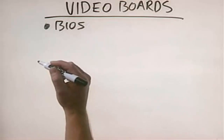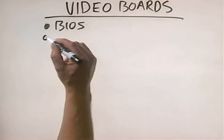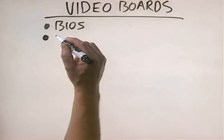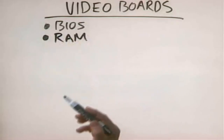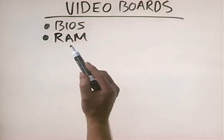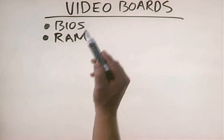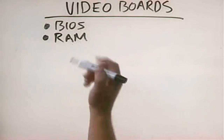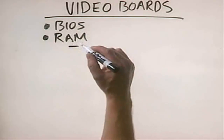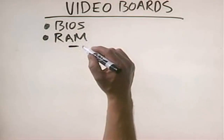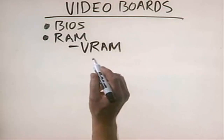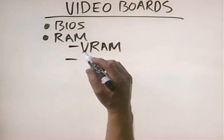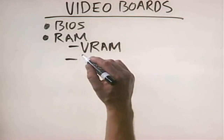The second component is the video RAM. When I say RAM here, I'm not talking about the motherboard RAM — the video board has its own RAM. On older video boards, this was made up of a special type of RAM chip called VRAM. Sometimes a different type of memory chip is used called WRAM.